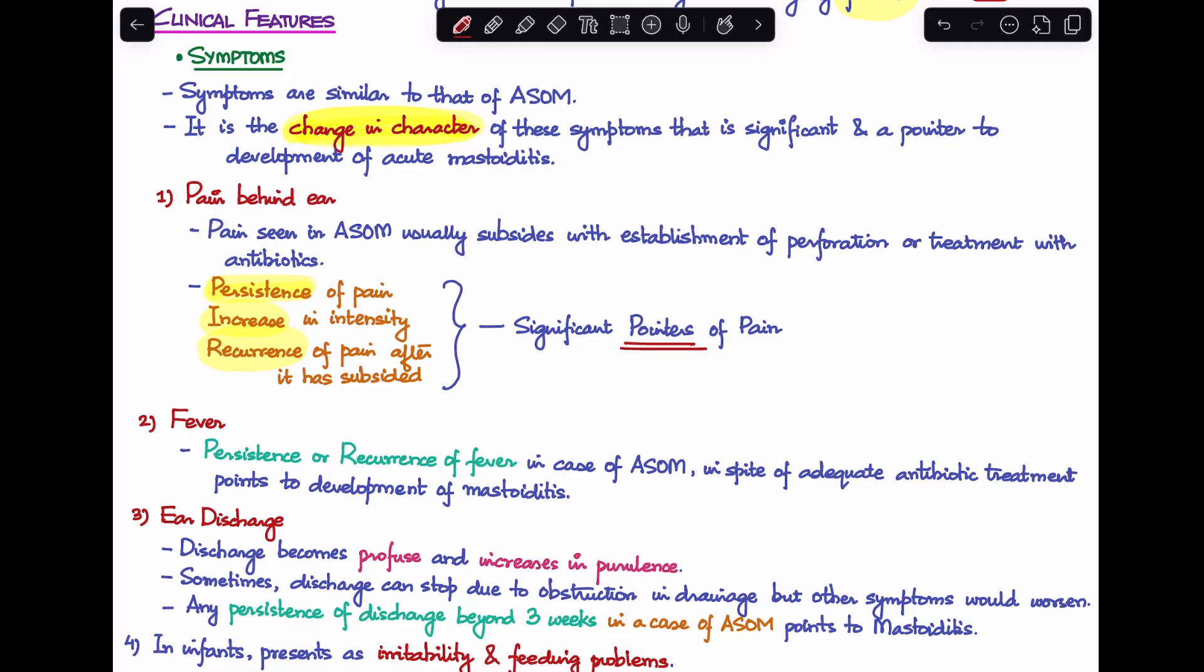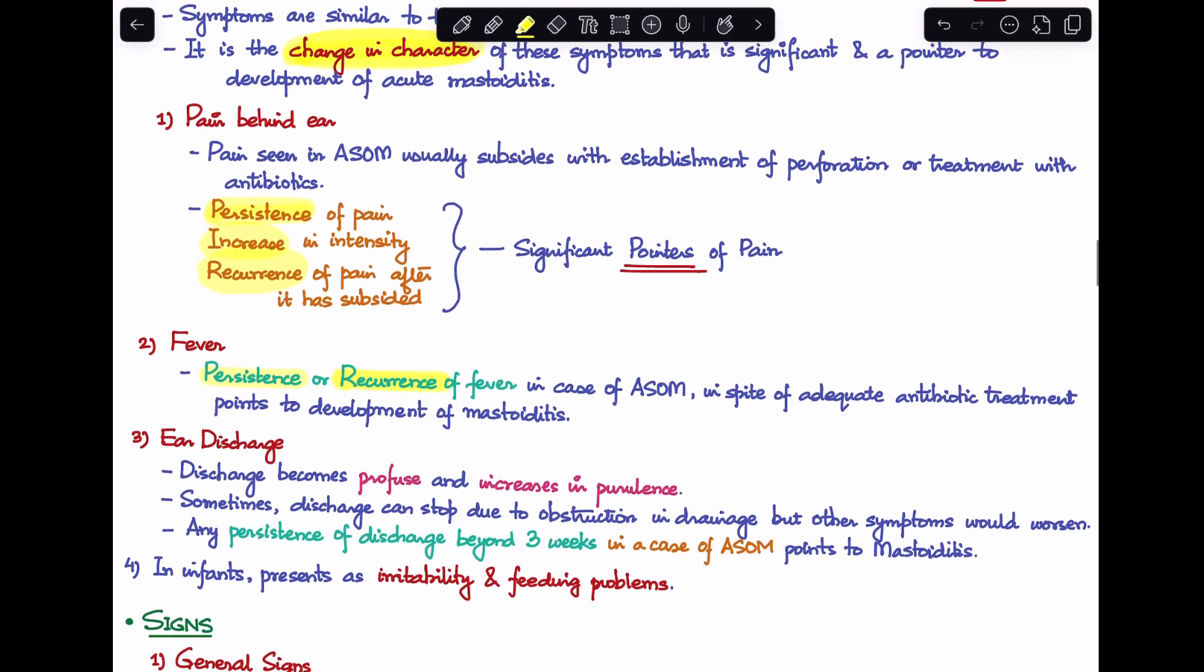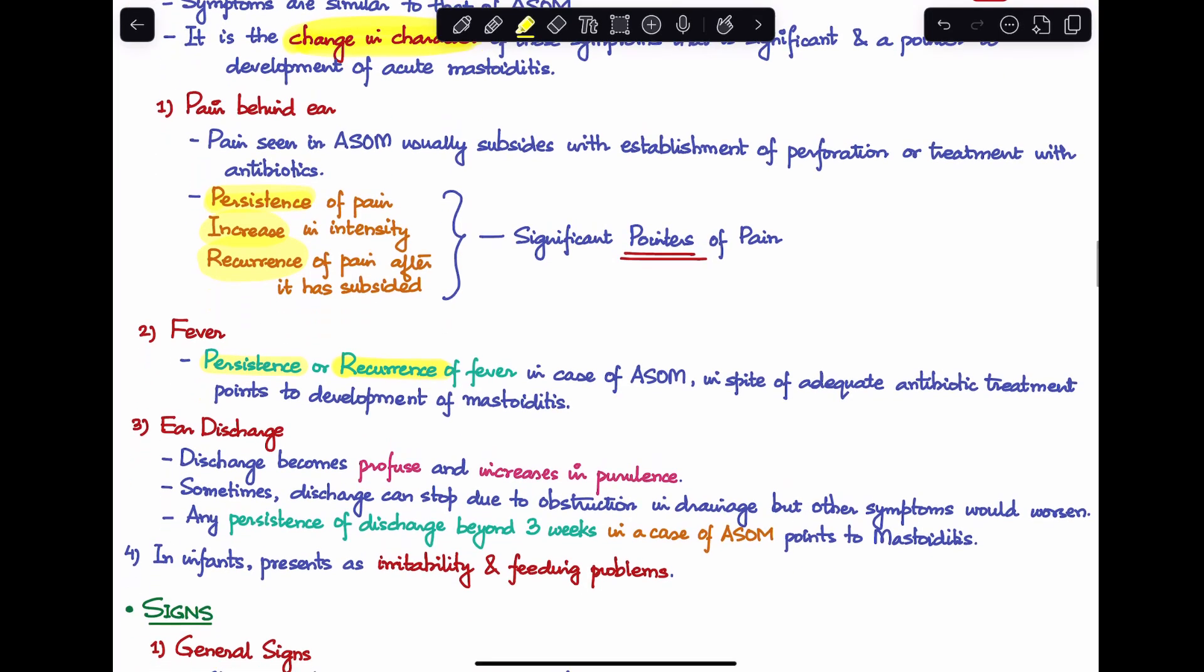Second feature is fever. When there's persistence or recurrence of fever in a case of acute otitis media despite adequate antibiotic treatment, that points towards development of acute mastoiditis.